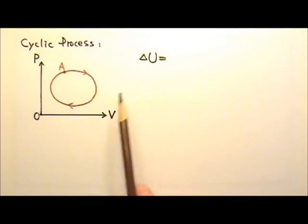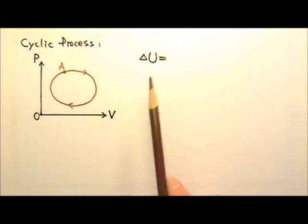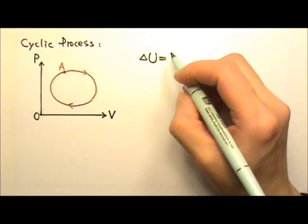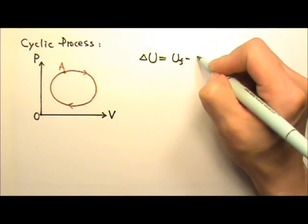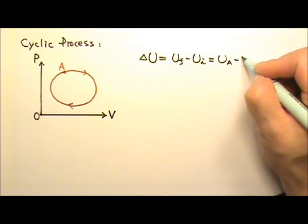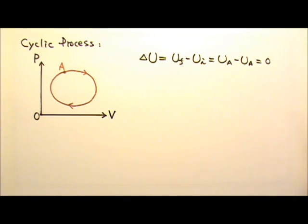What do you think is the change in internal energy of the system in this cyclic process? Delta U is U final minus U initial, and both the final and initial are state A. So this is zero.